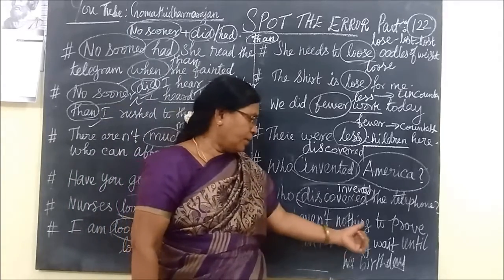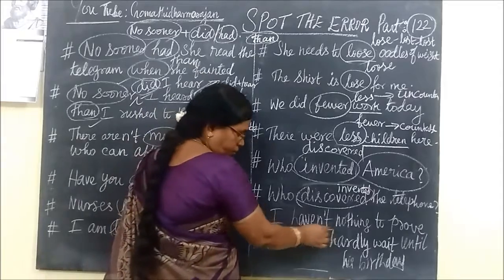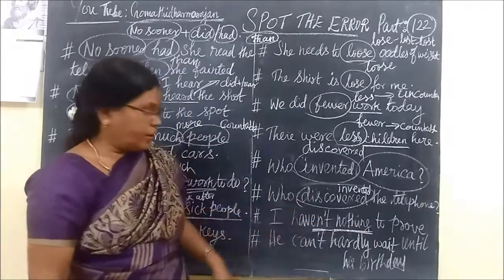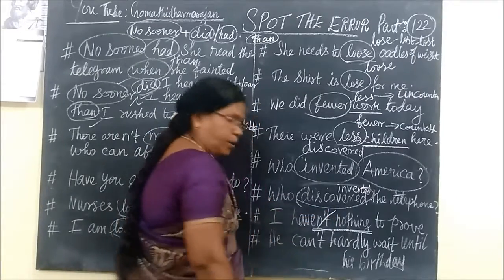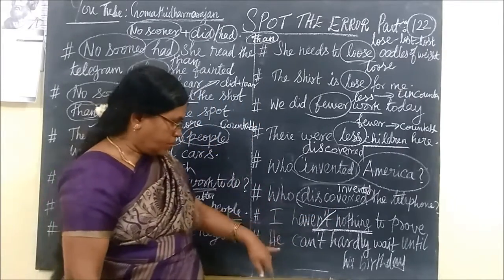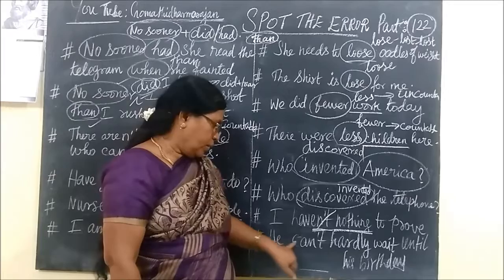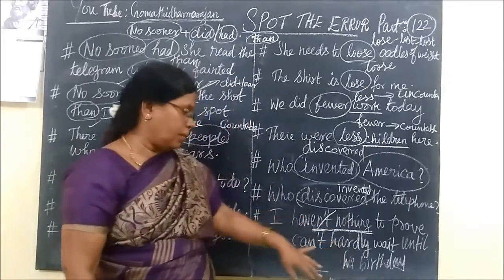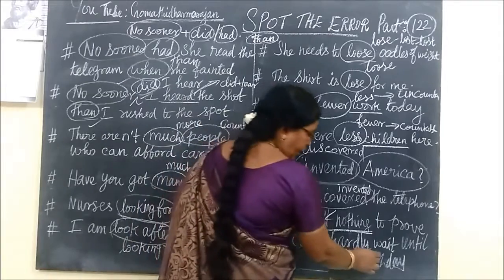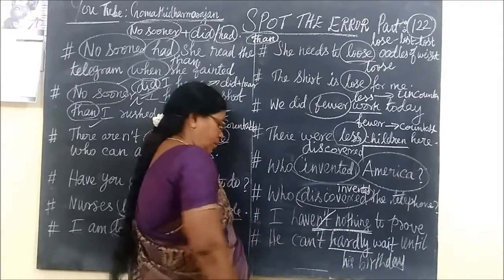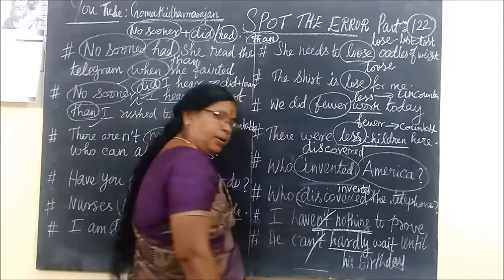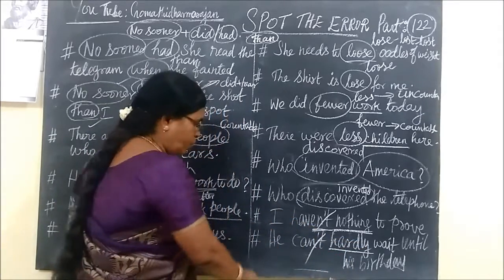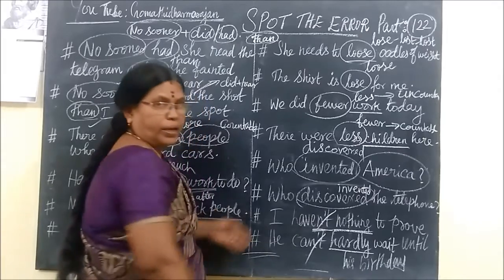Next: 'I haven't nothing to prove.' Here, 'not' is negative and 'nothing' is also negative — you cannot have two negatives in one sentence. The correct form is 'I have nothing to prove.' Similarly: 'He can't hardly wait until his birthday.' 'Hardly' is already negative, so you cannot also use 'can't.' The correct sentence is: 'He can hardly wait until his birthday.'